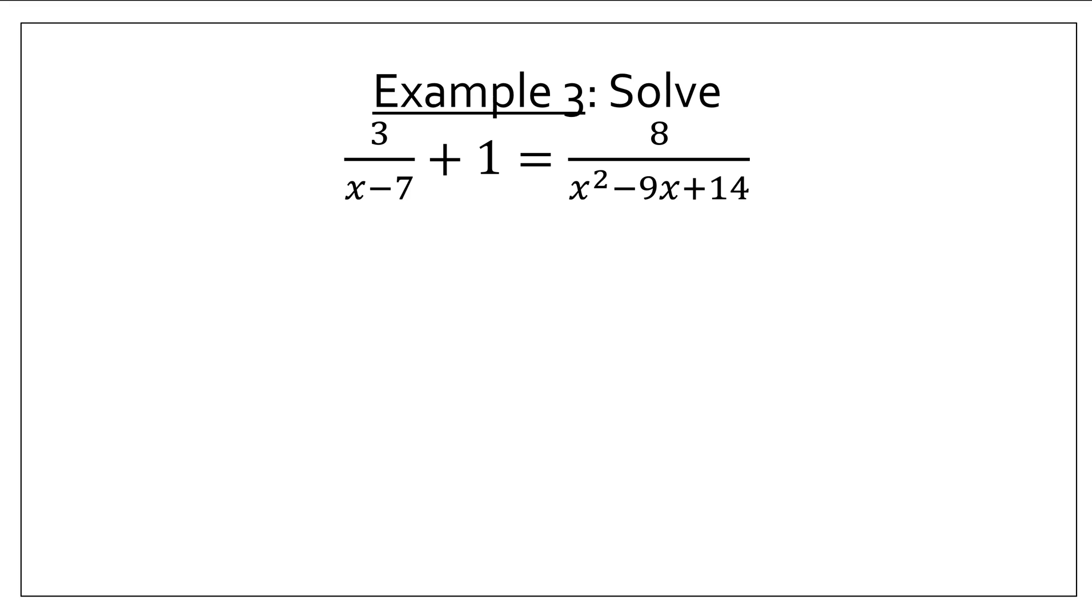Now, I have something very complicated. Here's another one of these two fractions on one side's problems. But the issue is over here, I have a very tricky quadratic. Now, what I could do is I could find my LCD and include the x minus 7. This, by the way, would be 1 over 1. I could include the x minus 7. And I could include the x squared minus 9x plus 14. But that's going to get really complicated and going to be really hard to solve.